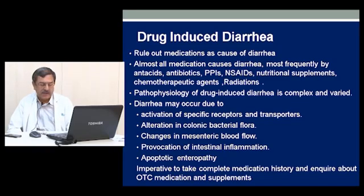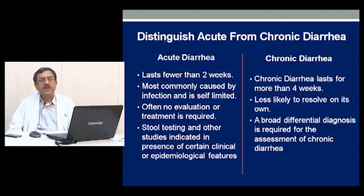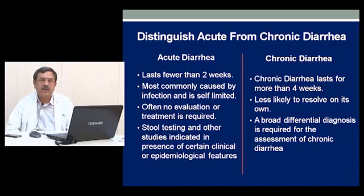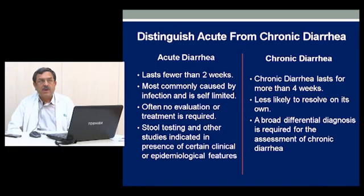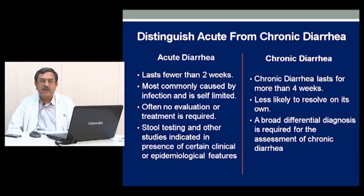The next step is to differentiate between acute and chronic diarrhea. Acute diarrhea is something which is less than 4 weeks in duration. It is most commonly caused by infection and is self-limiting. Often no treatment is required, though stool testing and other studies may indicate certain clinical and epidemiological features. Chronic diarrhea, on the other hand, is one which is more than 4 weeks in duration. It is less likely to have a spontaneous remission, and we must approach such cases in a broad-based manner with a differential diagnosis in mind.